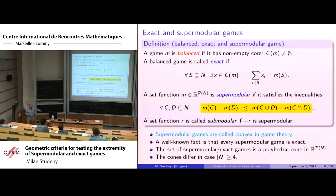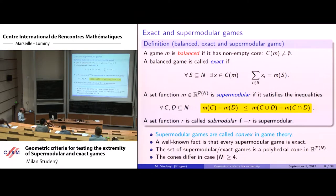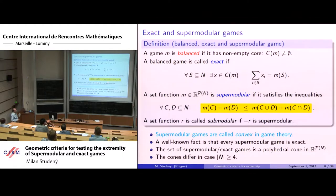A game is called balanced if it has a non-empty core, and exact if an additional condition holds: for every subset S, there exists a vector in the core that is tight for that lower bound, meaning equality is achieved. A set function is called supermodular if it satisfies the supermodular inequality, while the inverse inequality gives submodularity. Modular functions satisfy equality. Supermodular games are called convex in game theory because supermodularity corresponds to convexity.